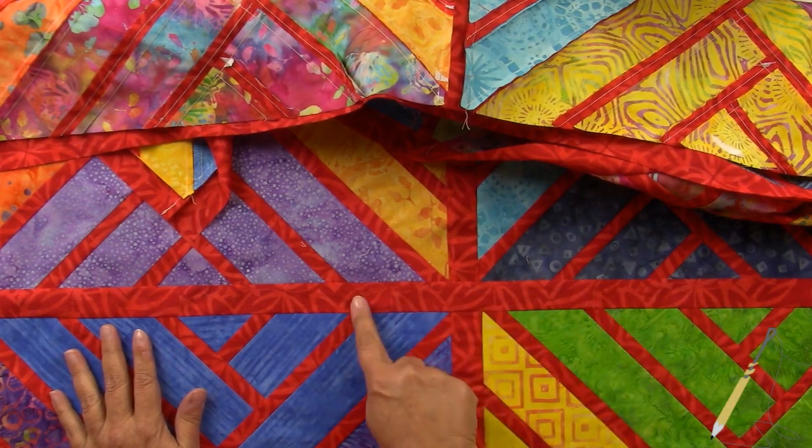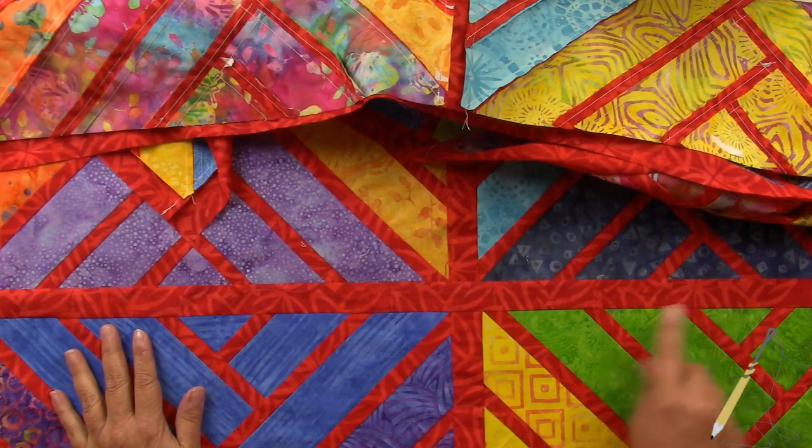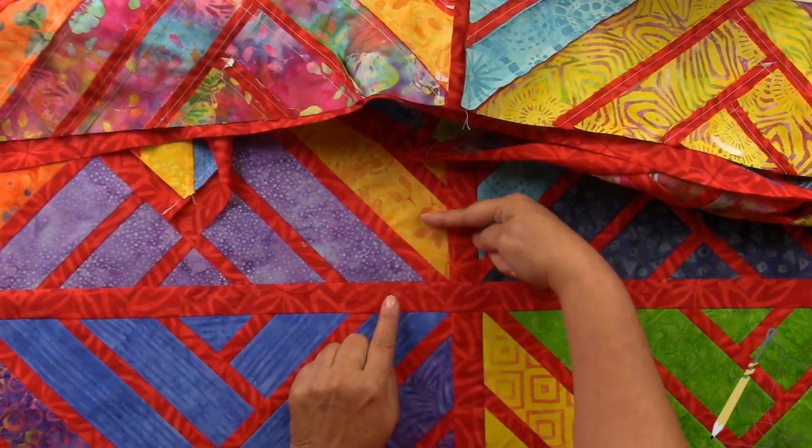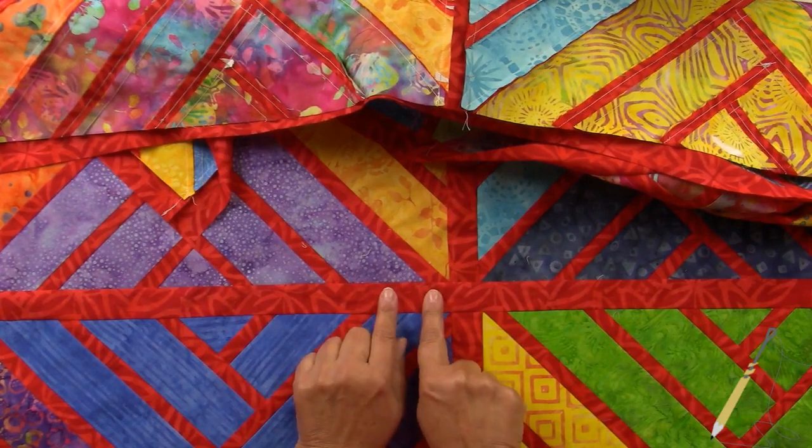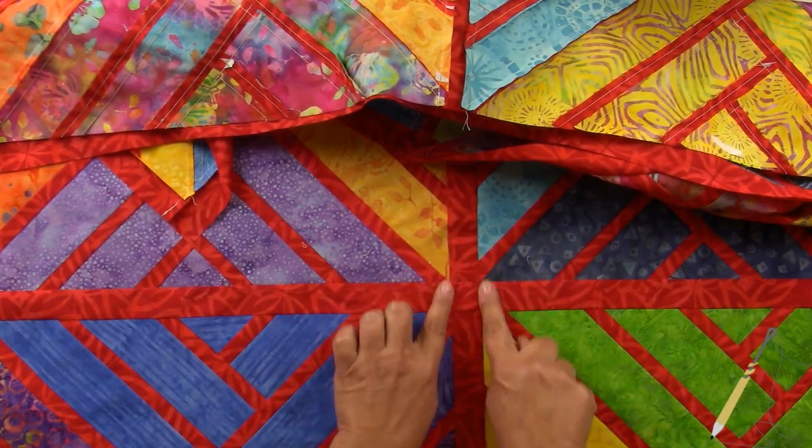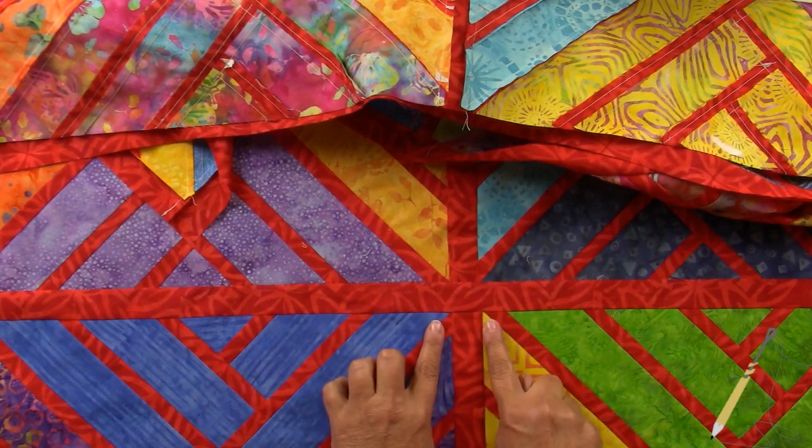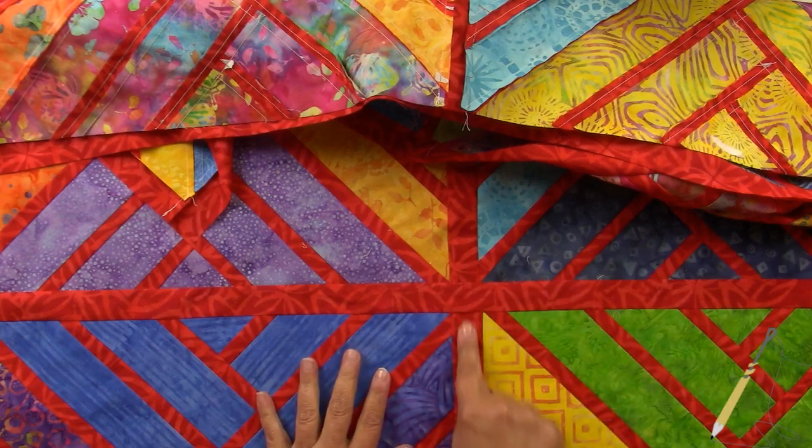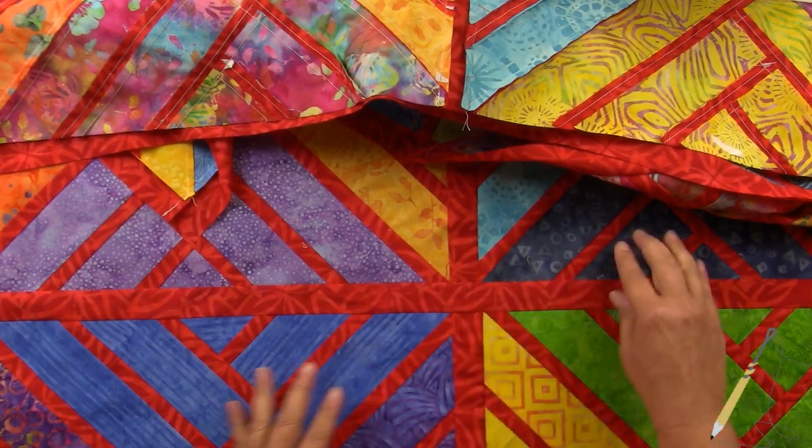Once you have stitched one of the vertical sashings to one of the columns and you're stitching the other column onto the vertical sashing, you need to take care that we're lining up the horizontal sashing. Sometimes they can be off a little bit and we don't want them to be off, so you have an opportunity to line it up.